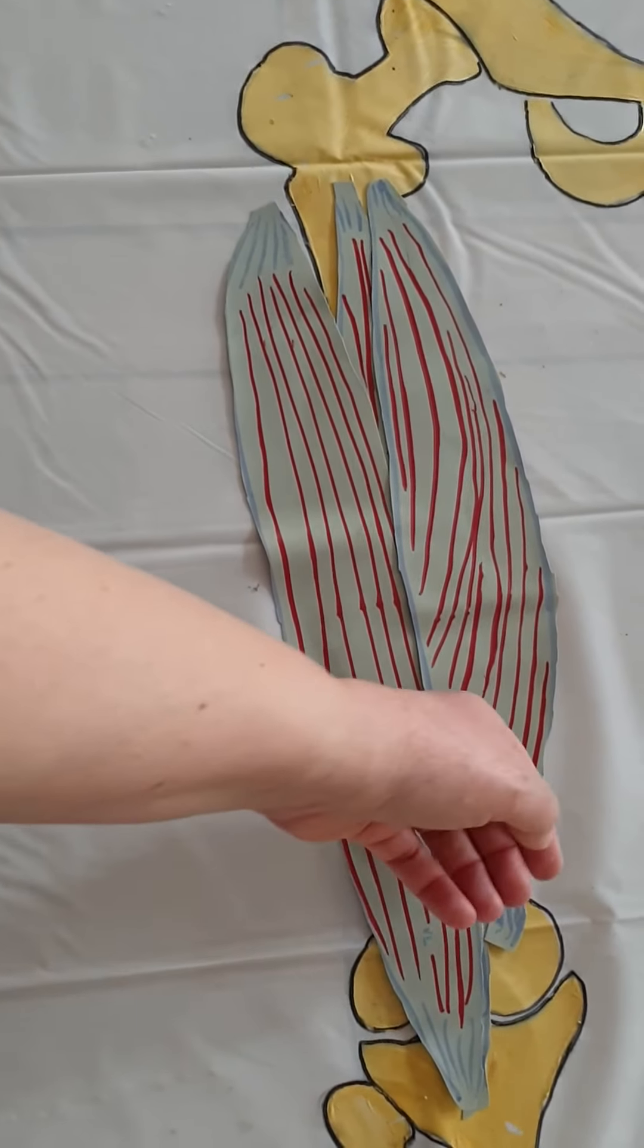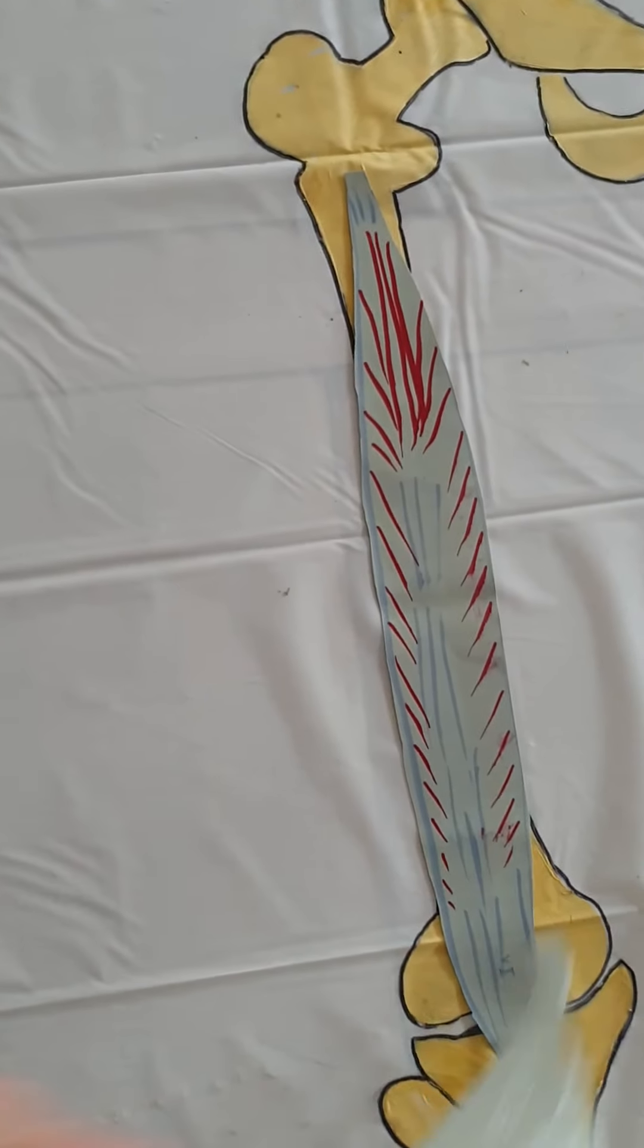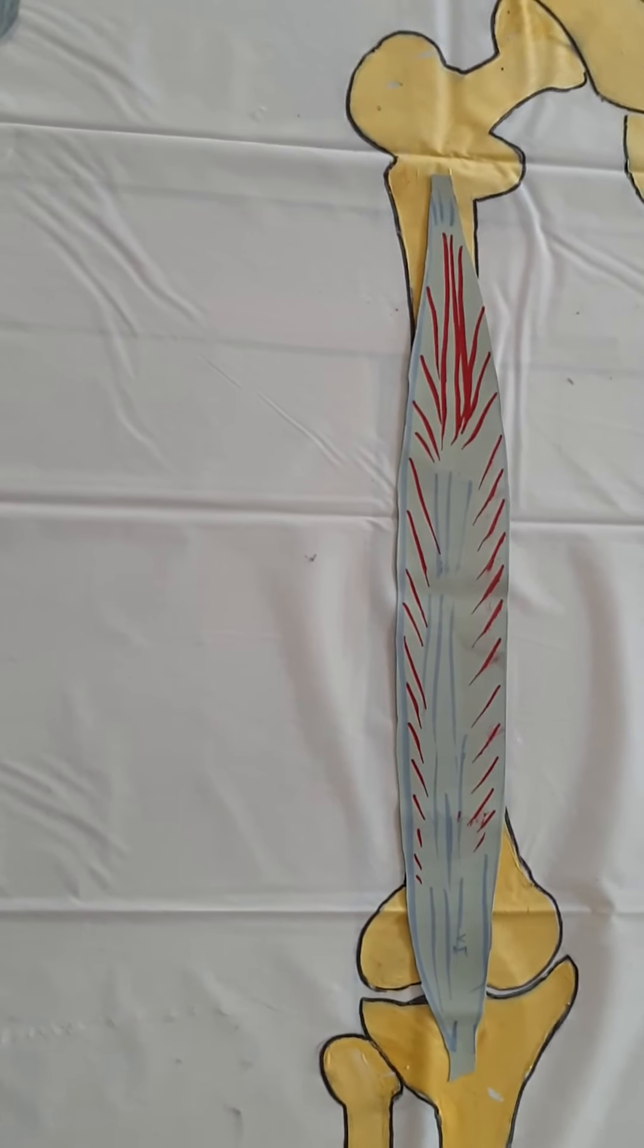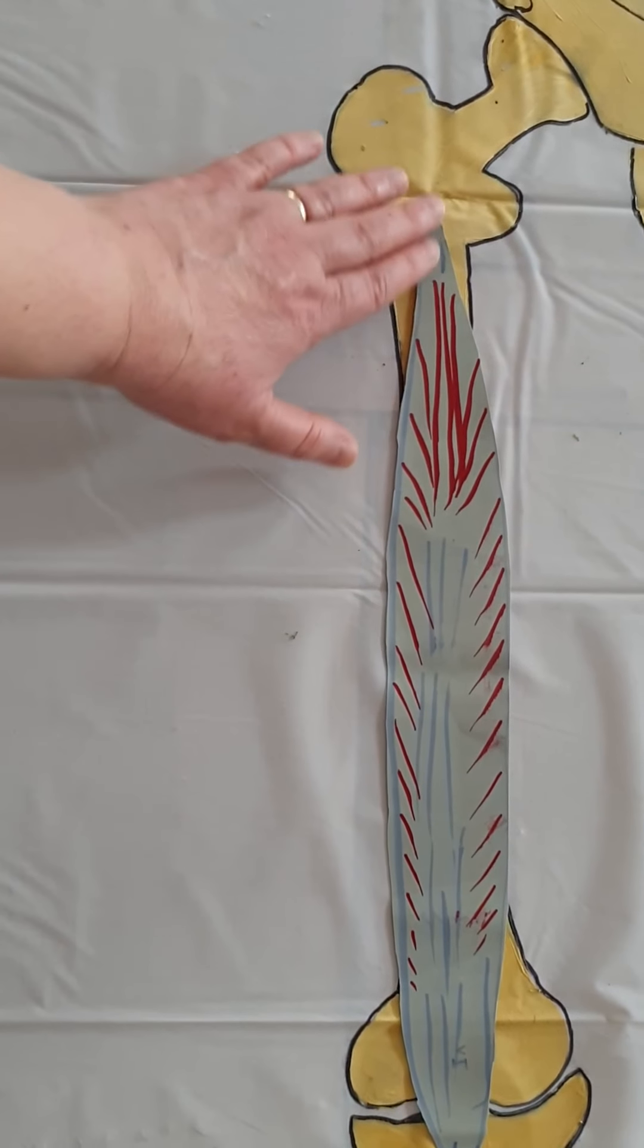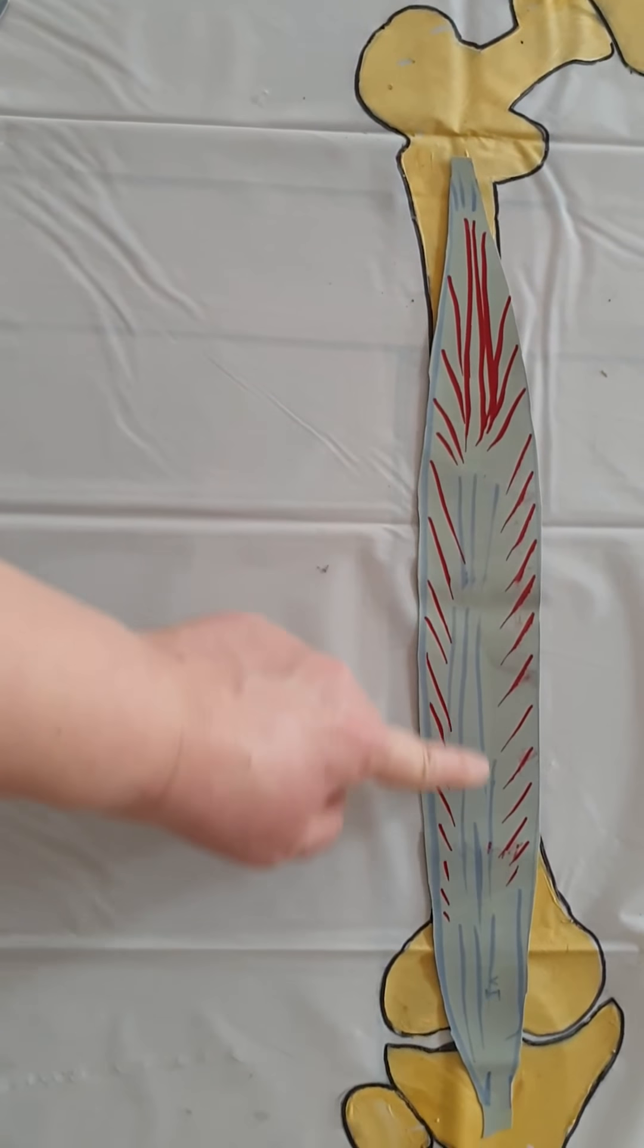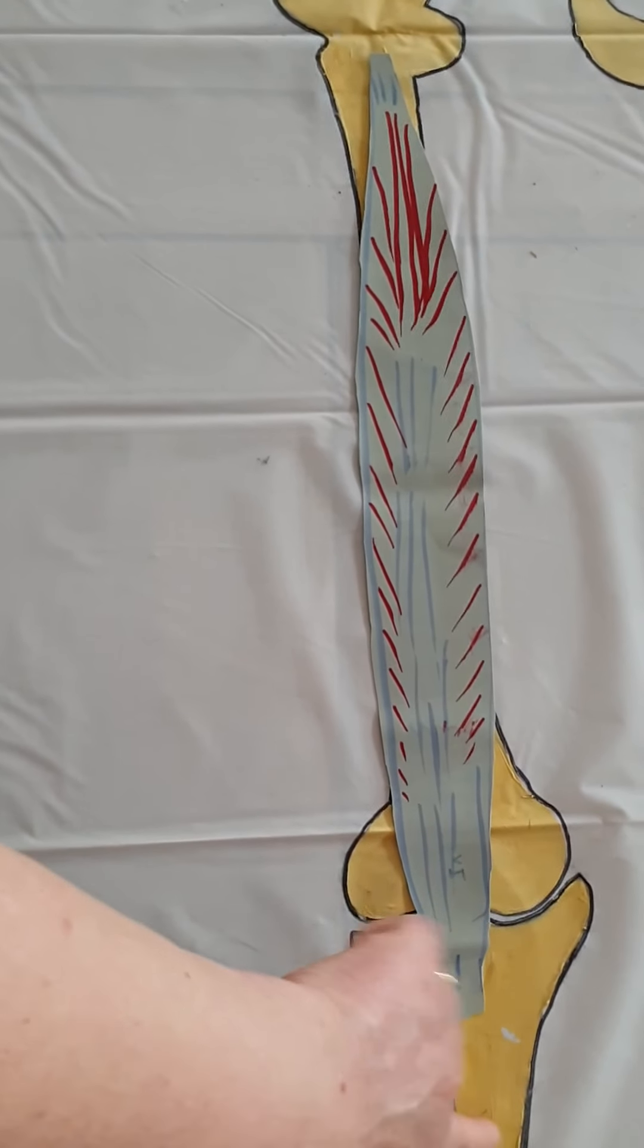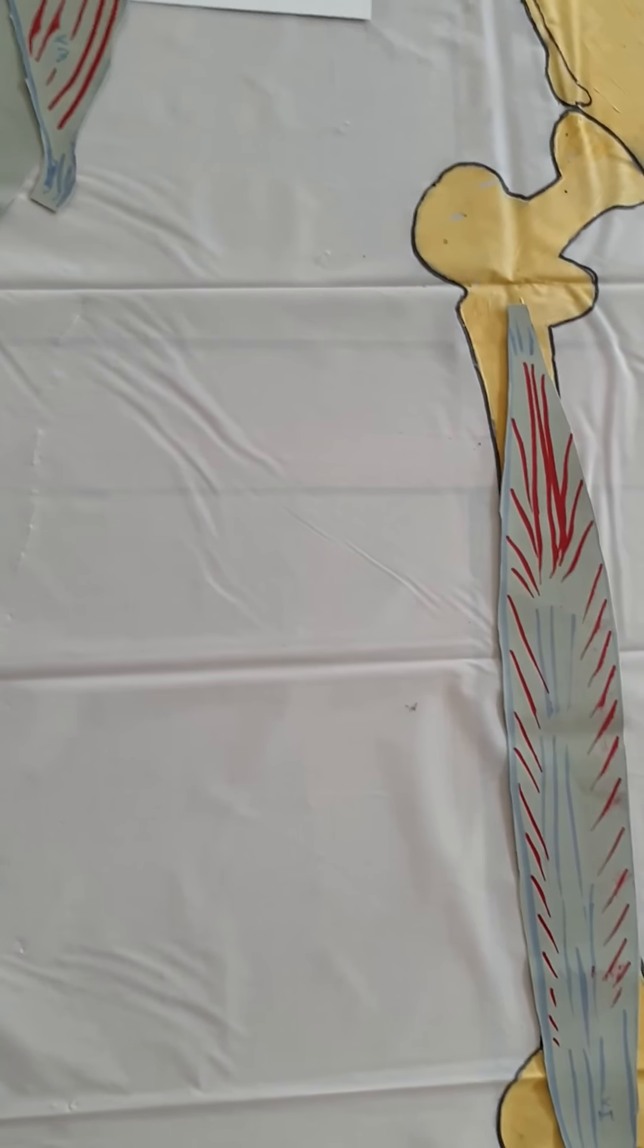I'm going to slide them out of the way so you can see what lurks behind, which is the vastus intermedius. And that inserts from the anterior and lateral shaft of the femur, comes down and inserts into the patella tendon, down into the tibial tuberosity.